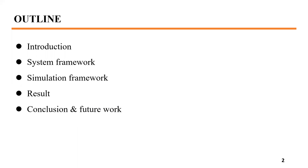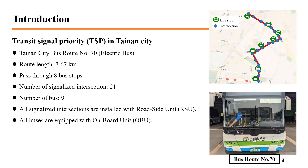Here is the outline of the slide. There are five parts in this presentation. First is about the introduction of the case. This study is about Transit Signal Priority, also called TSP, in Tainan City, Taiwan. It is implemented on Tainan City Bus Route No. 70, passing through eight bus stops, including 21 signalized intersections and nine electric buses. All intersections are installed with roadside units (RSU), and buses are equipped with onboard units (OBU).